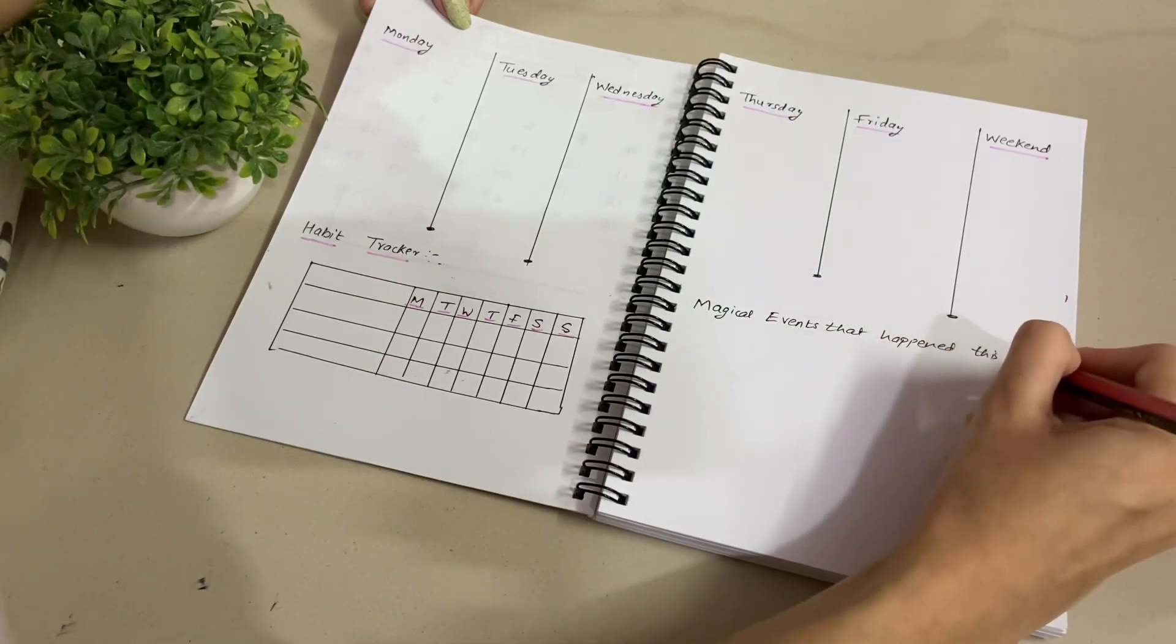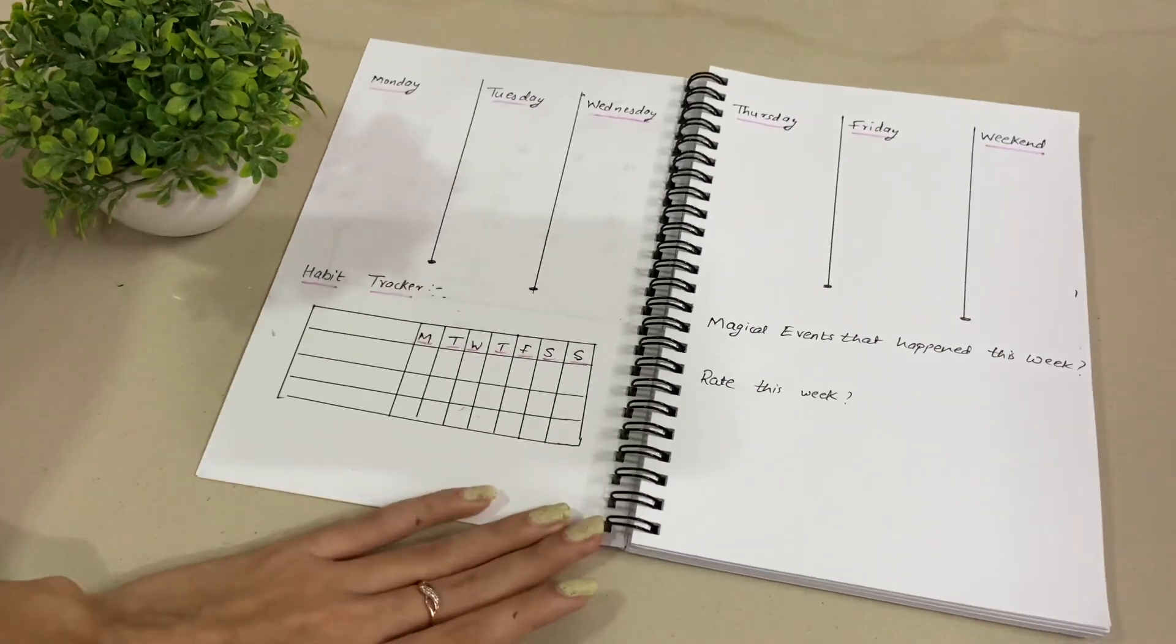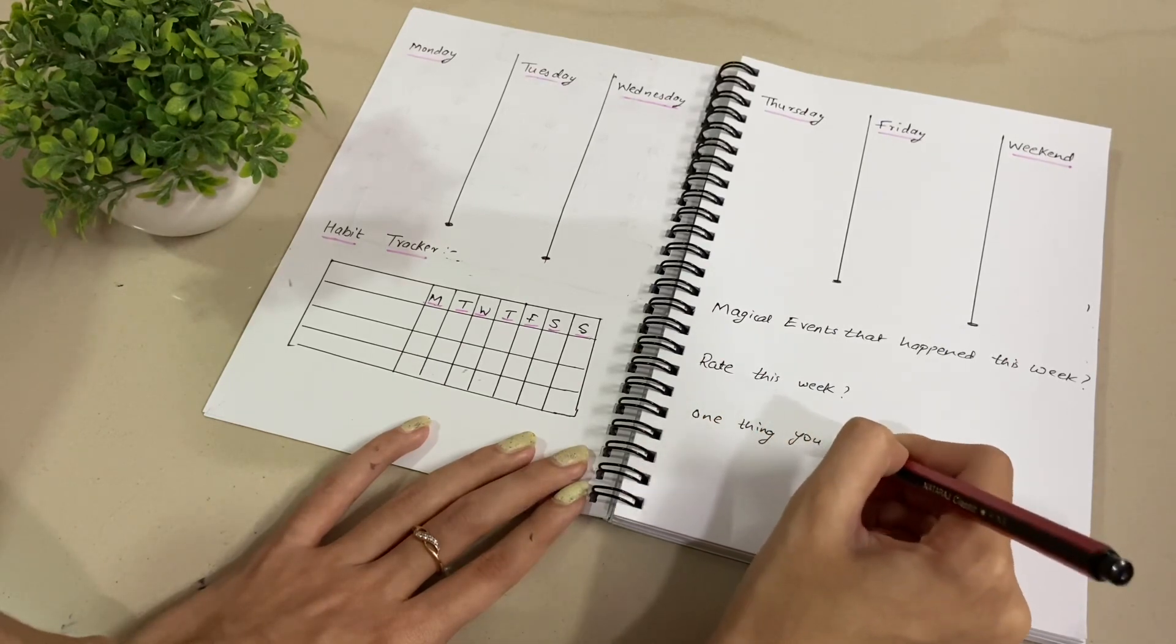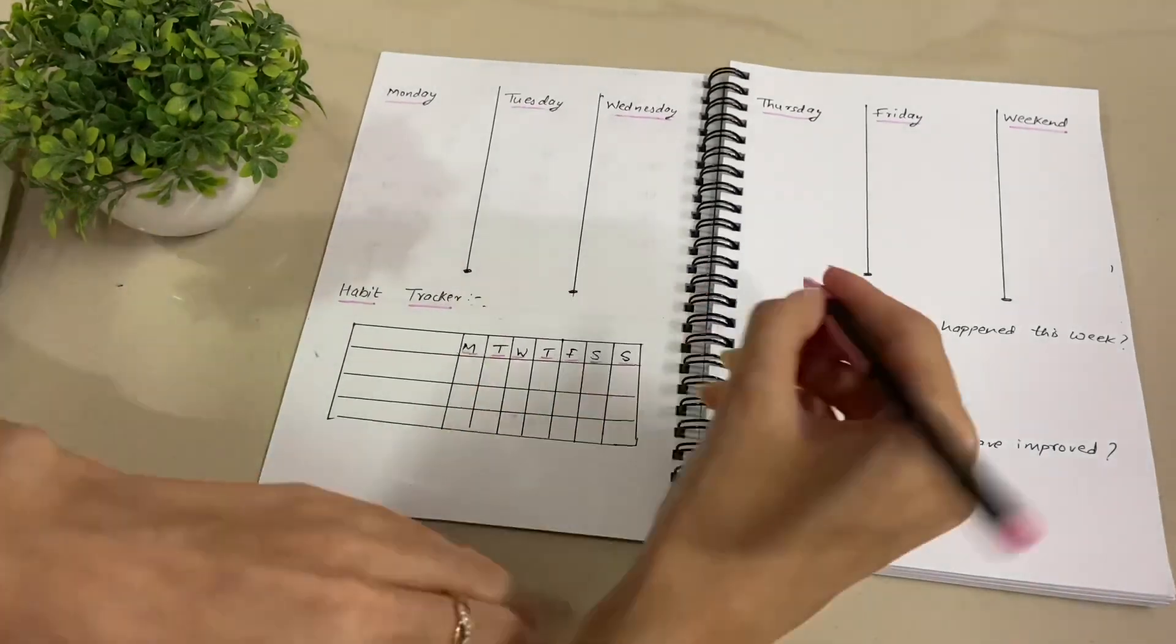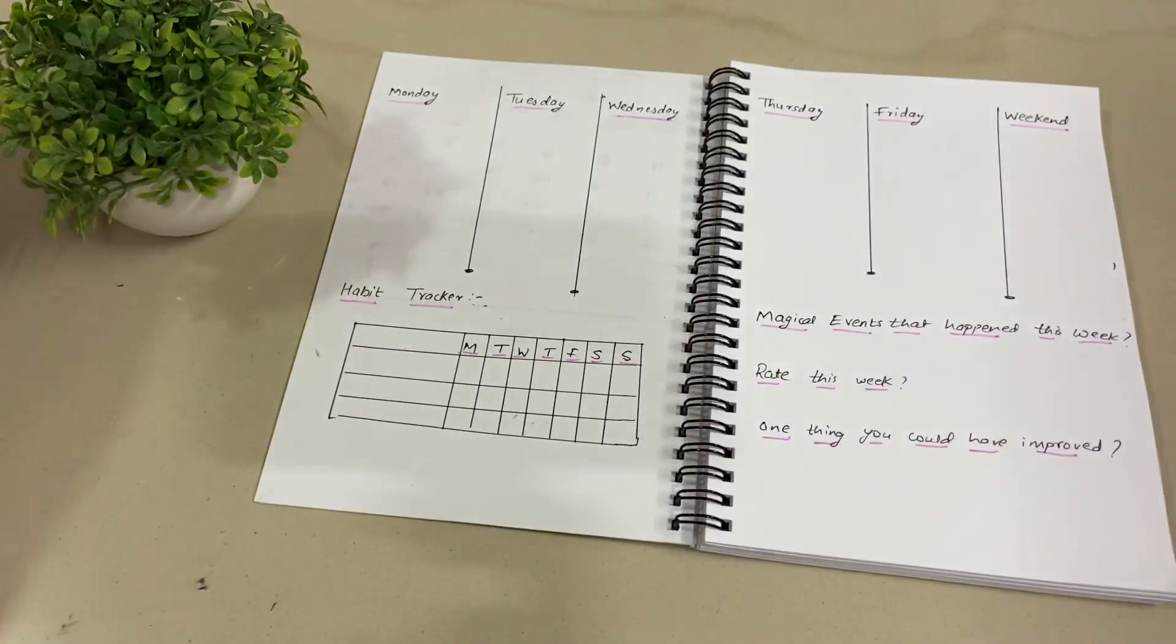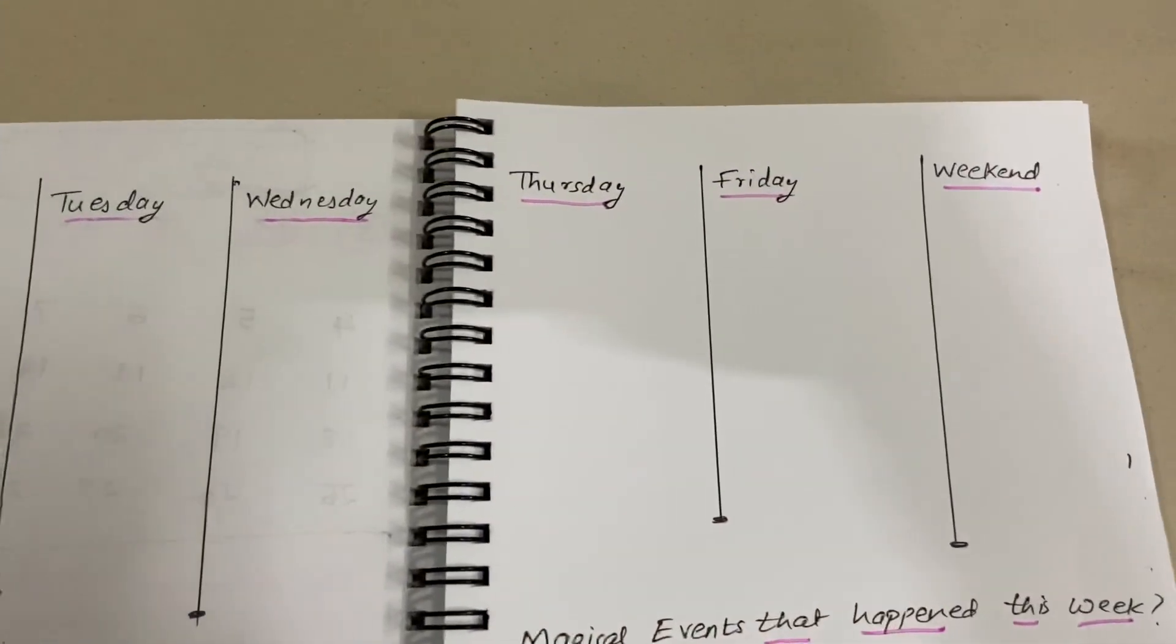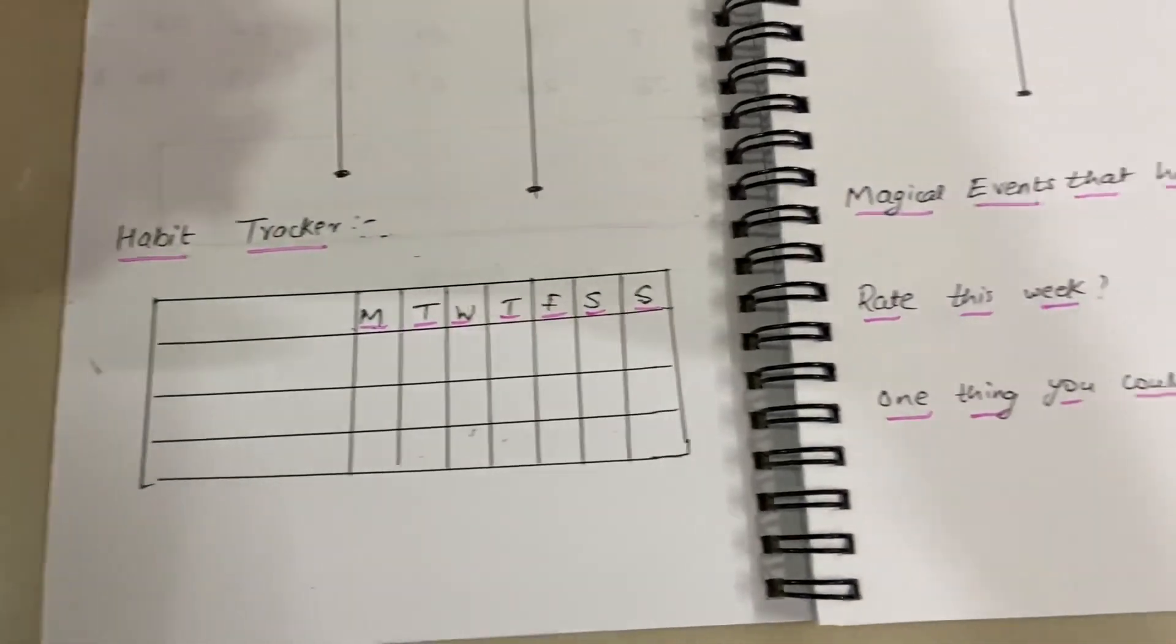Then on the right section I will write a few questions for some prompts for the week, which can kind of motivate you. The first question is: magical events that happened this week. And the second is: rate this week. So you can rate it out of five or ten and you can realize what all you want to improve in this particular week. Repeat these weekly sheets for as many weeks you have in that particular month, so you can make it four times or five times accordingly.